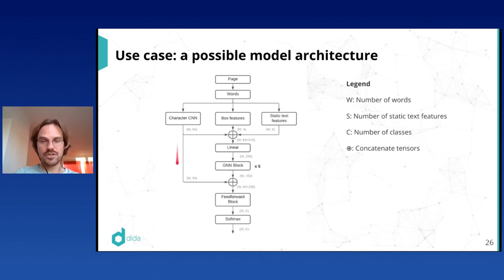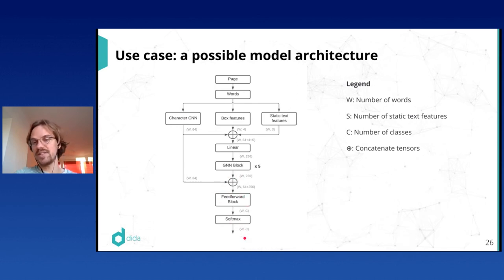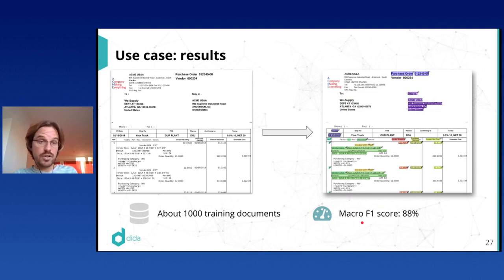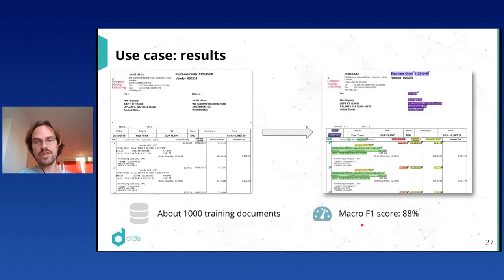A skip connection also helps the character CNN converge. At the end, a feed-forward block and softmax output probabilities for each word to belong to each class. Out of about a thousand training documents, we got a model with an 88% F1 score, which is very good — better than the previous system the client had in place, where they had to manually label each new table layout that appeared.